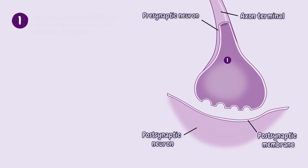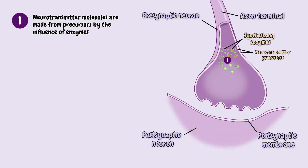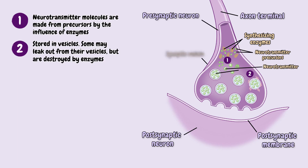Number one, the neurotransmitter molecules are made from precursors by the influence of synthesizing enzymes. Number two, the neurotransmitter molecules are packed and stored in vesicles. Some may leak out, but are destroyed by degrading enzymes.